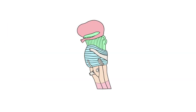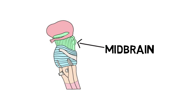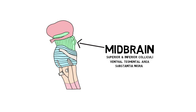The final section of the brainstem, as we move toward the rest of the brain, is called the midbrain. On the posterior side of the midbrain, we find four bumps representing two paired structures: the superior and inferior colliculi. The superior colliculi are involved in eye movements and visual processing, while the inferior colliculi are involved in auditory processing. The midbrain also contains the major dopamine-producing nuclei of the brain: the ventral tegmental area and substantia nigra. The ventral tegmental area is involved in motivation and reward, while the substantia nigra plays an important role in movement.